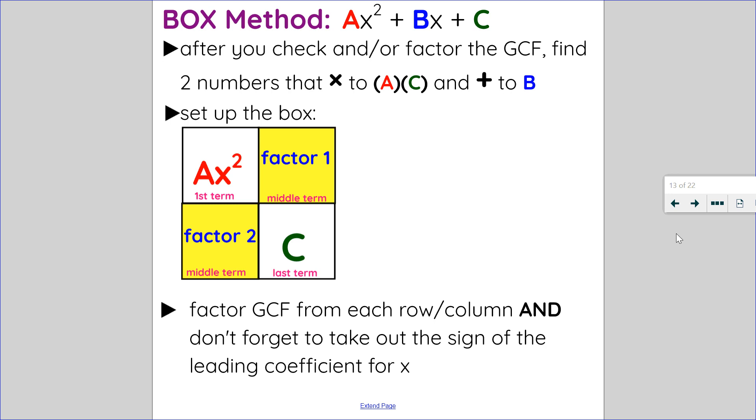First thing I'm going to do is always check for the GCF. So I've checked for the GCF, I factored it out. With the trinomial that remains, I am going to find two numbers that multiply to a times c, coefficient of the first term times the constant, and also add to b, which is the coefficient of my middle term.